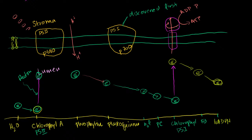In the electron transport chain video, when I talk about cellular respiration, I give a visual concept of how this actually might happen — how as these go through, you actually can jam together the ATP and the ADP. So that's another question: we talk about these electrons going from one molecule to another, but how does that actually pump hydrogen through?